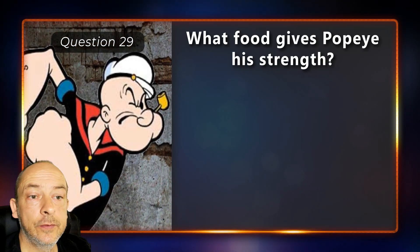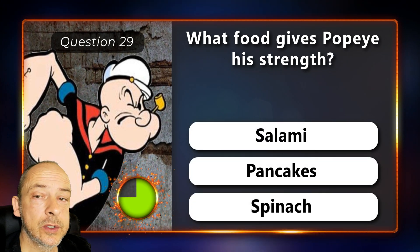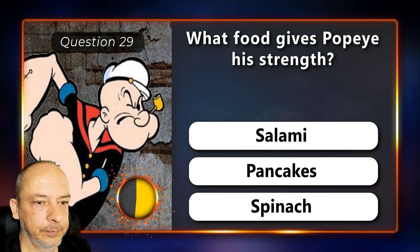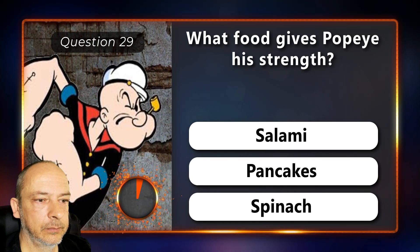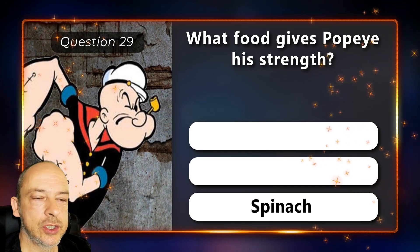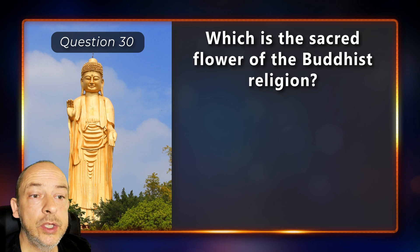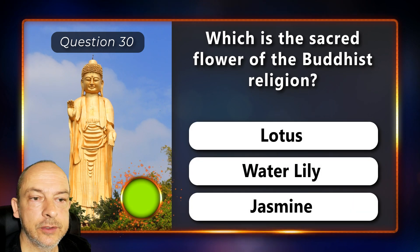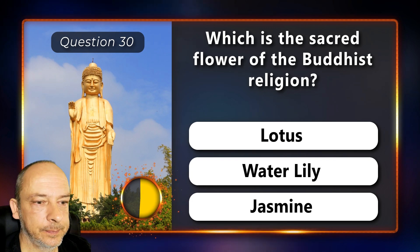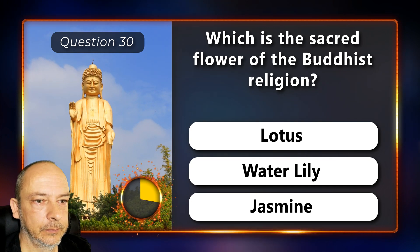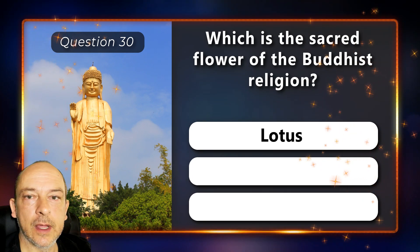Which food gives Popeye his strength — salami, pancakes, or spinach? Spinach. Which is the sacred flower of the Buddhist religion — the lotus, the water lily, or the jasmine flower? It is the lotus flower.